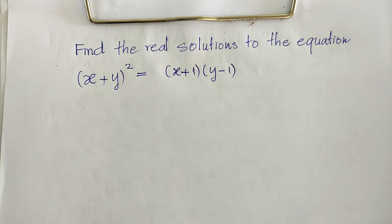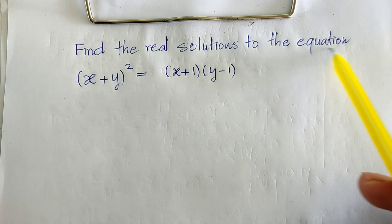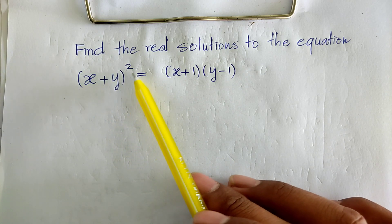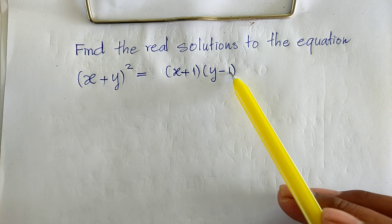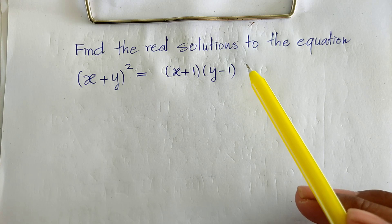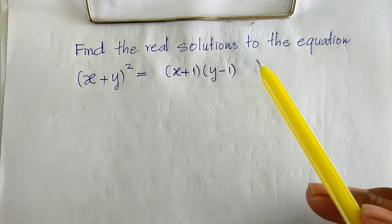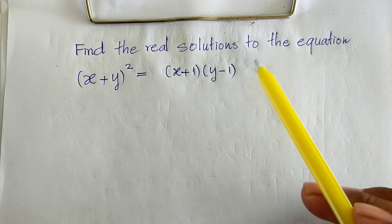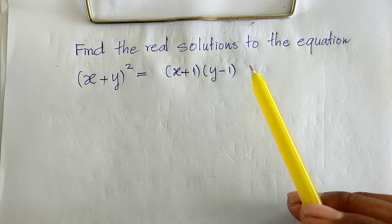Hello everyone, welcome to my YouTube channel. Today I have one exercise on paper: find the real solution to this equation — (h + y) all squared equals (h + 1) multiplied by (y − 1). If you know how to solve this, please try it first, then come back to watch from the beginning to verify your solution. Please don't forget to subscribe to my channel for more exciting videos. Okay, let's go to the solution together.